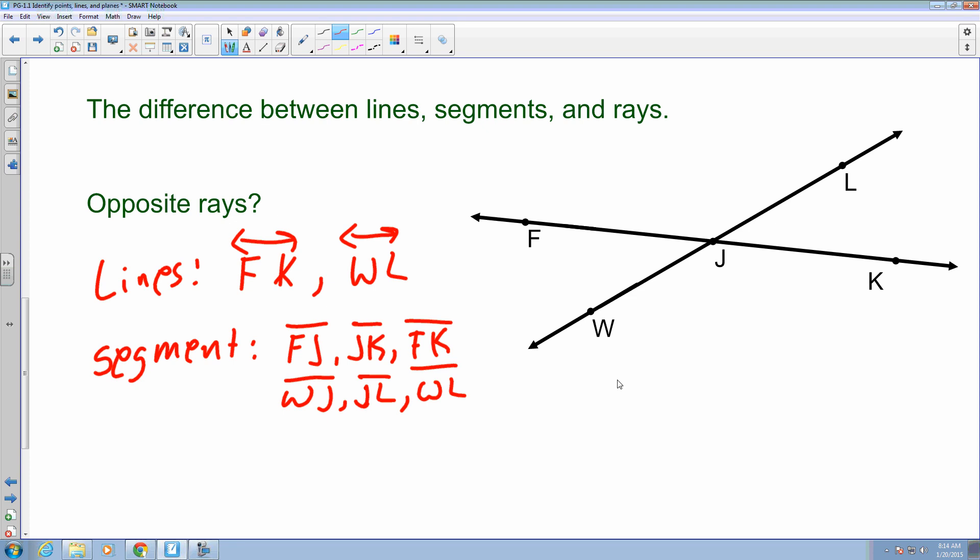Okay, for rays, I can write an example. So it looks like I can start here and say JF, that way, I can say KF that way. I can also kind of go the other way, so I can say that it would be FJ pointing this way, and also FK.